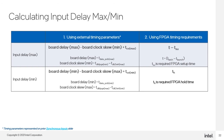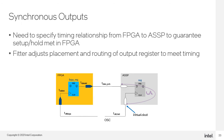Here are equations to generate the max and min values for set_input_delay constraints. For the max value, add the maximum clock-to-out of the SSP to the maximum board delay and subtract the minimum clock skew. If working with only FPGA numbers, the maximum delay is the clock period minus the setup time. For the min value, add the minimum board delay to the minimum clock-to-out of the SSP and subtract the maximum clock skew. If focusing on the FPGA, only the hold time requirement is needed. On the input side, the virtual clock was launching data; on the output side, the virtual clock is latching data.